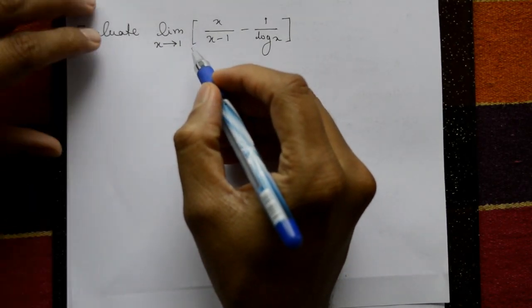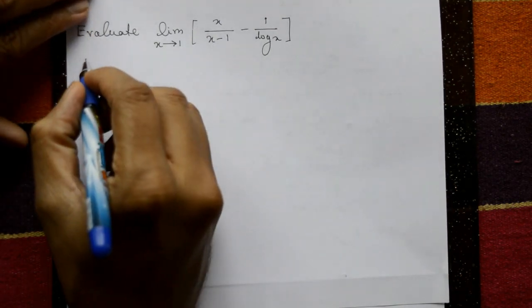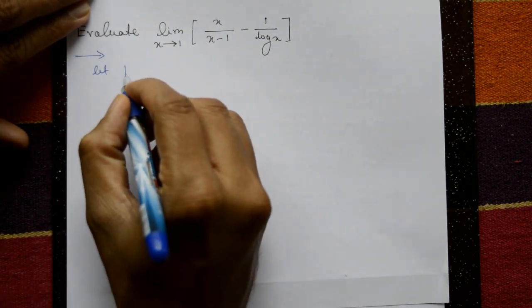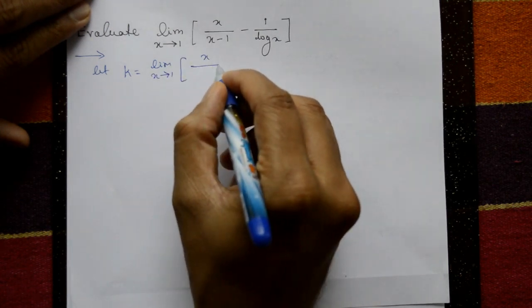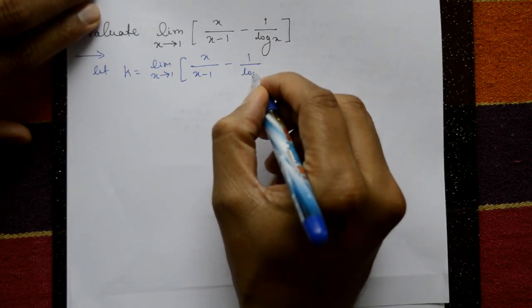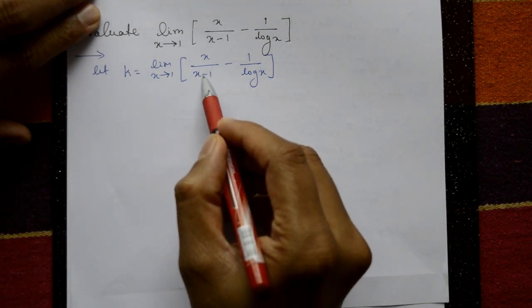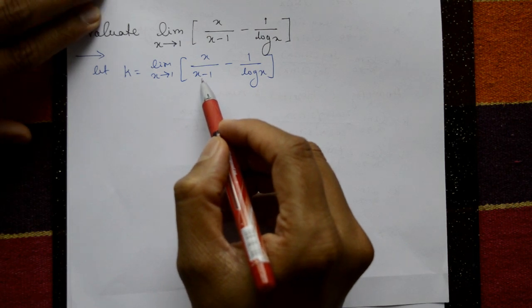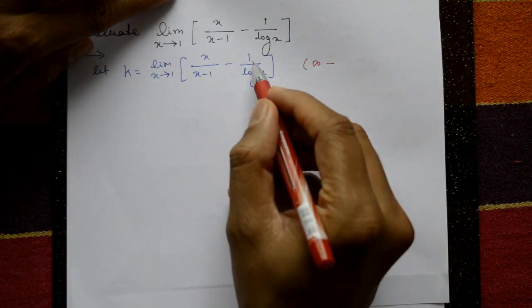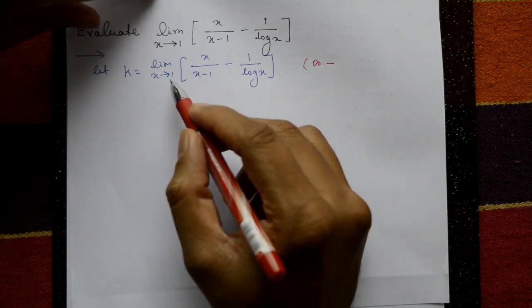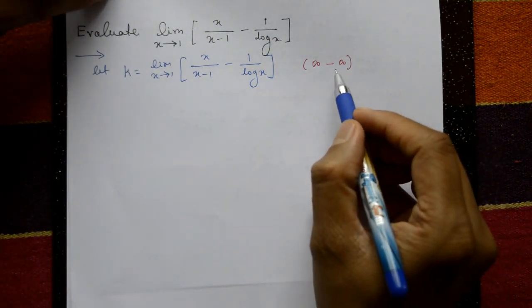Evaluate limit x tends to 1 of x/(x-1) minus 1/log x. Let k equal this limit. Taking x = 1 gives 1/(1-1) = 1/0 = infinity, and 1/log(1) = 1/0 = infinity. So we have infinity minus infinity form — we cannot directly apply L'Hôpital's rule; we need 0/0 or infinity/infinity form.